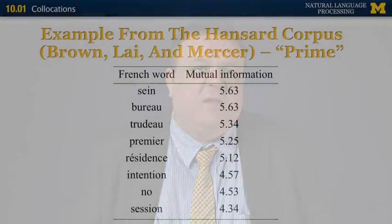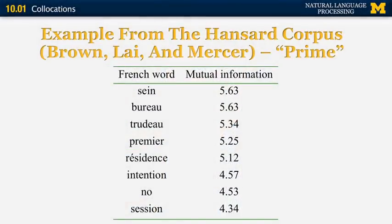Here's an example from the Hansard corpus of Canadian parliamentary proceedings, which includes both French and English texts. A technique like this was used to extract collocations that translate from one language to the other. The word prime, as in prime minister, was translated to corresponding French words based on mutual information in sentences aligned between the two languages.